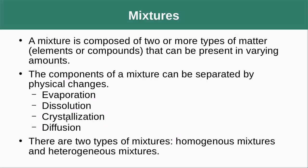A mixture is comprised of two or more types of matter — elements or compounds — that can be present in varying amounts. The components of a mixture can be separated by physical changes such as evaporation, distillation, crystallization (when something comes out of a liquid solution and becomes a solid), and diffusion. There are two types of mixtures: homogeneous mixtures and heterogeneous mixtures. Mixtures are what happen when you combine elements or compounds that are not chemically bonded to one another.